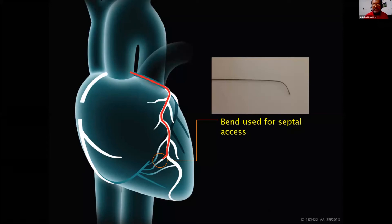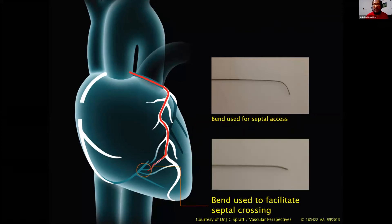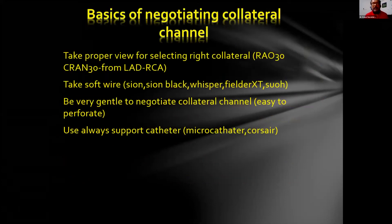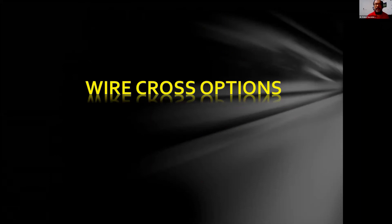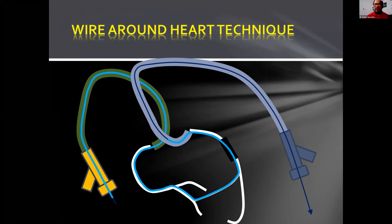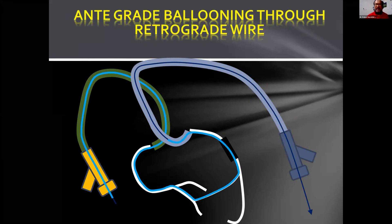When entering the septum from the donor artery entry gate, give a big bend to get in. When negotiating the collateral, give a small bend. If you see a visible connection, the Corsair/Sion approach is preferred. If it's accidentally tortuous, take through with a wire. If it's an invisible channel, try the Fielder XTR, FC wire, or Pilot. Basics of negotiating collateral: take proper view, be very gentle, always use a support catheter.